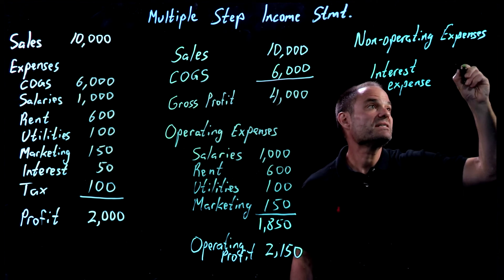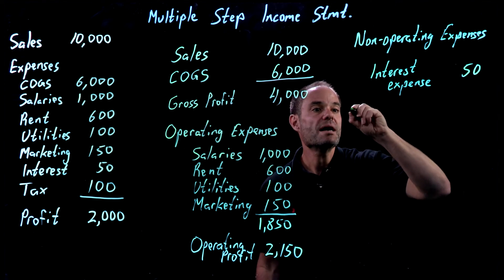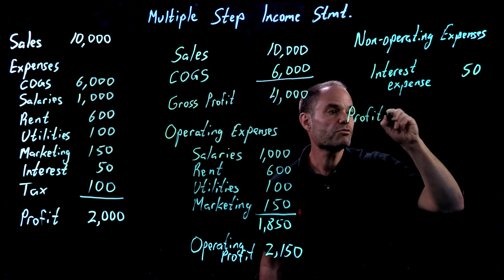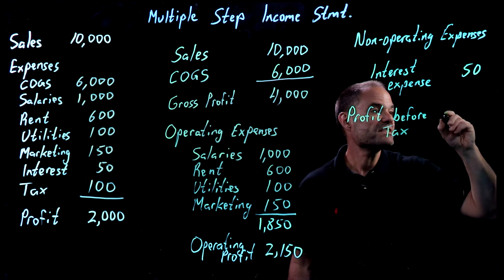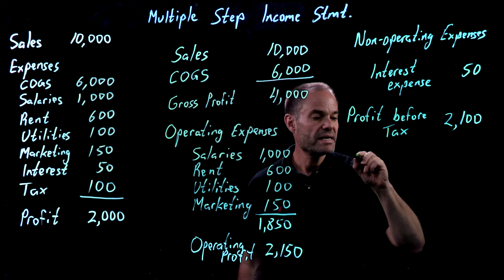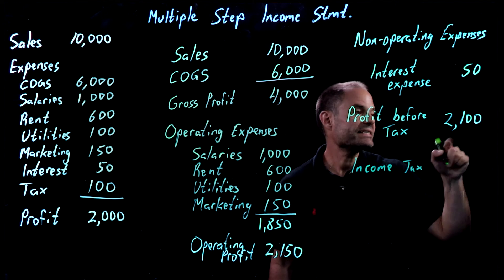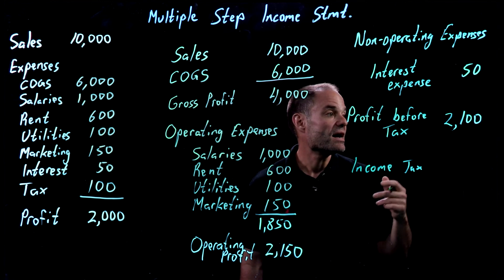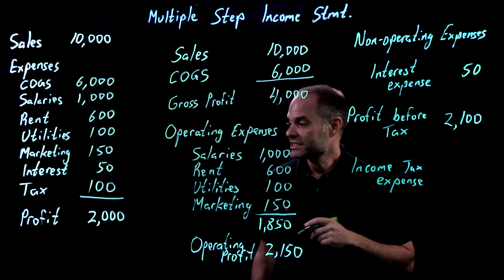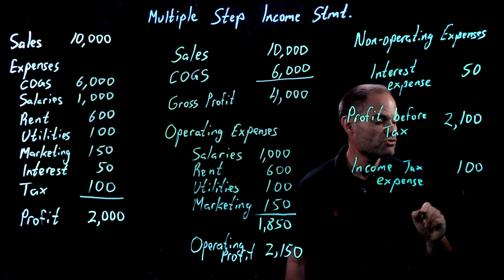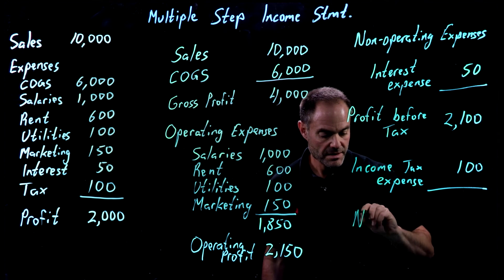In our case, we have interest expense of $50. When I subtract my interest expense from my operating profit, I'm left with something called profit before tax — that's $2,150 minus $50, which is $2,100. Then finally, we have our income tax, which is always shown at the end separately. The reason for that is I need to calculate my profit before tax in order to determine how much income tax I have, because usually it's a percentage of that amount. My income tax expense — we'll just take a fixed number for this example — we'll put it in as $100 and subtract that, and we're left with net profit.